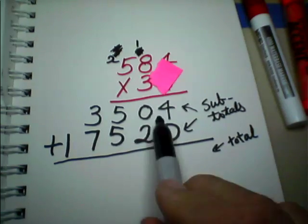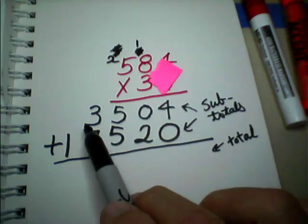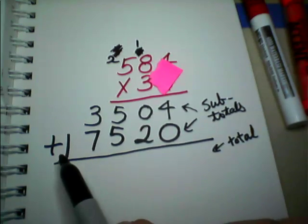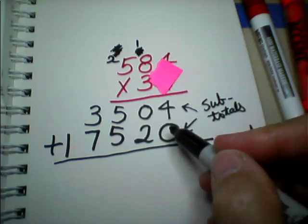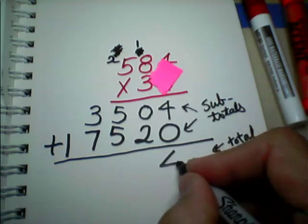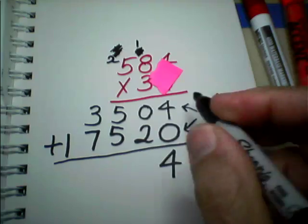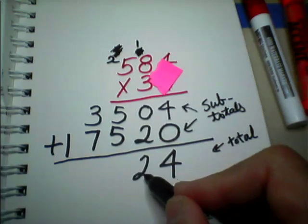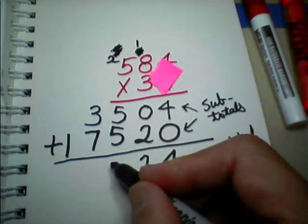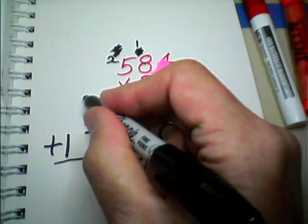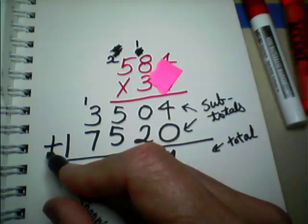So, let's just look at the black part here. And we're adding 3,504 to 17,520. So, 4 plus 0 is 4. Nothing to carry. 0 plus 2 is 2. Nothing to carry. 5 plus 5 is 10. So, we write down the 0, carry the 1, and we add it right in because we're doing addition.